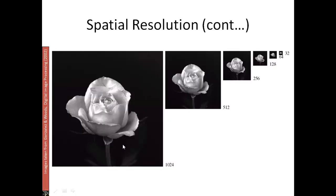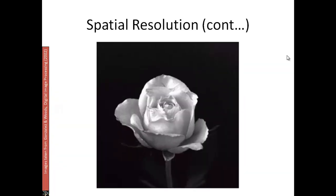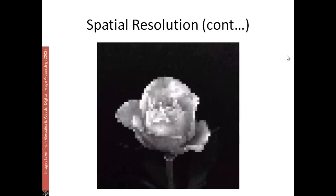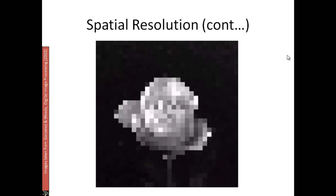For a 1024×1024 image, to get half the resolution I ignore alternate columns and rows to get 512×512. Similarly I can go down to 256, 128, 64, and so on. You can see the image starts to pixelate as the resolution becomes smaller.